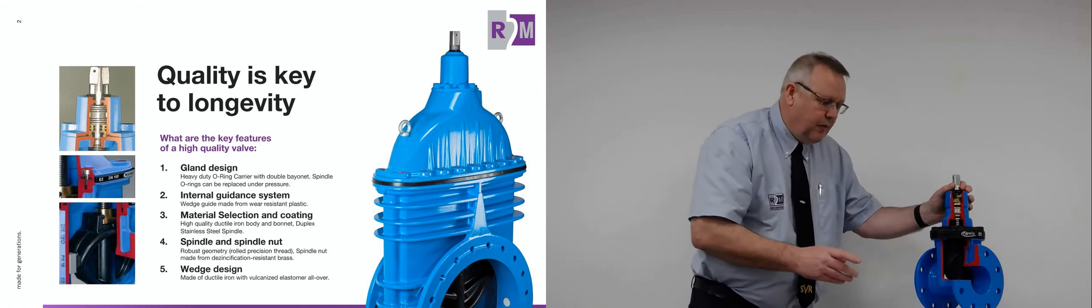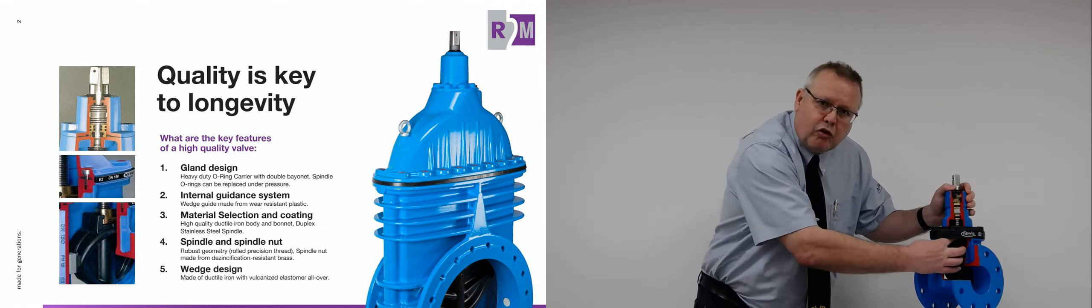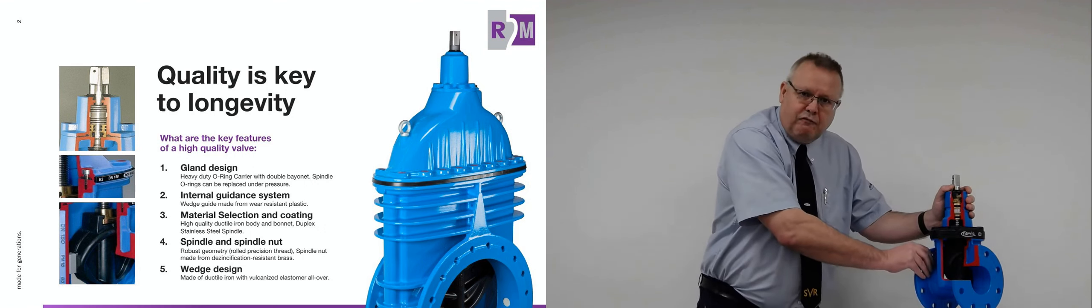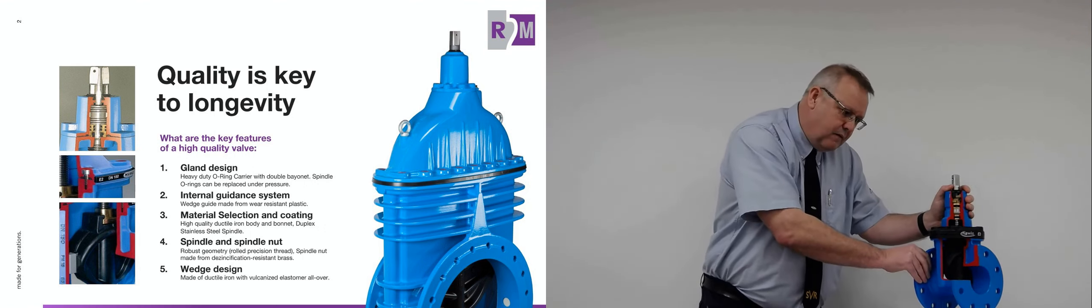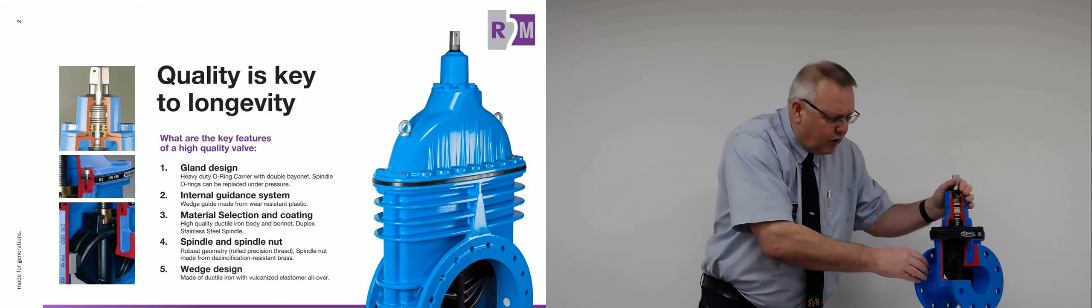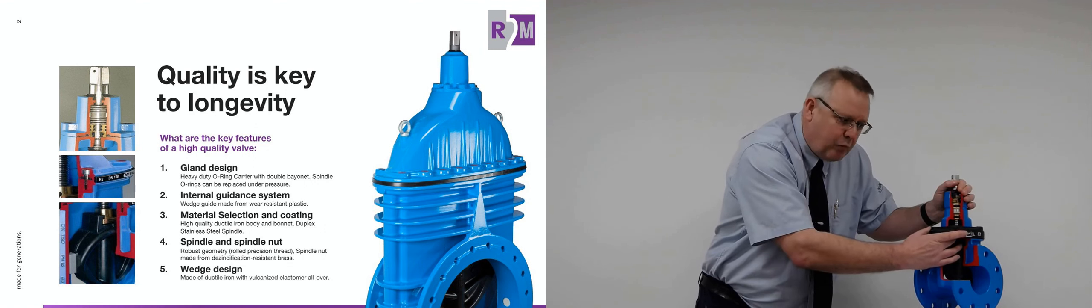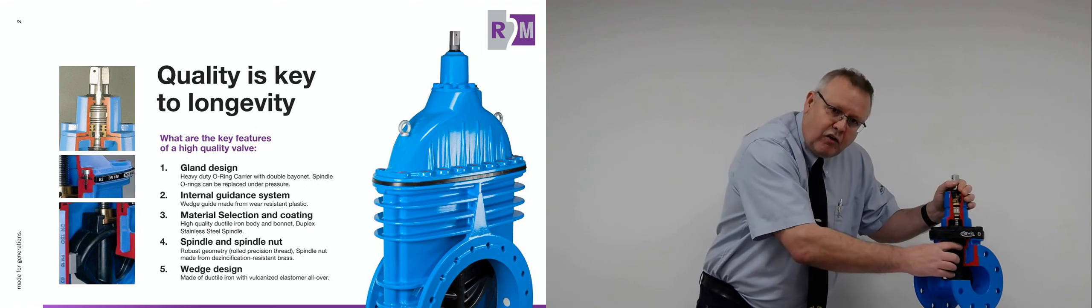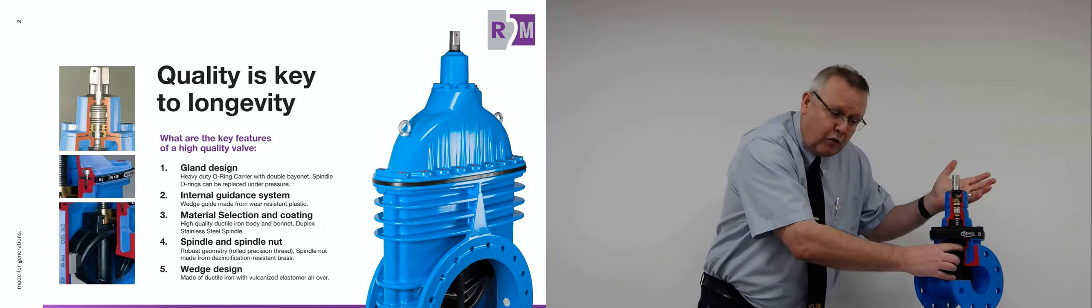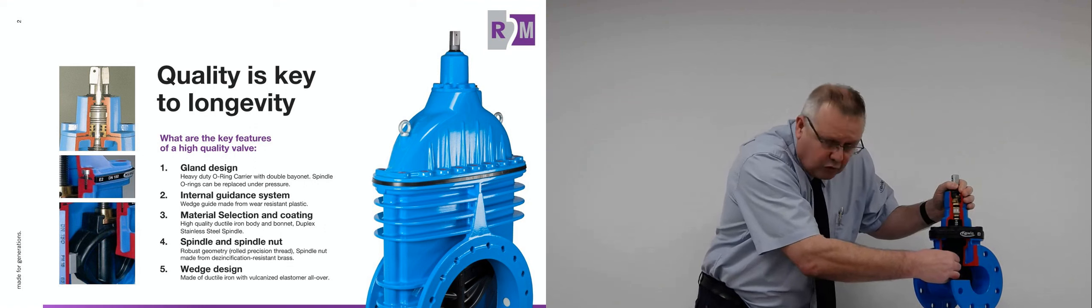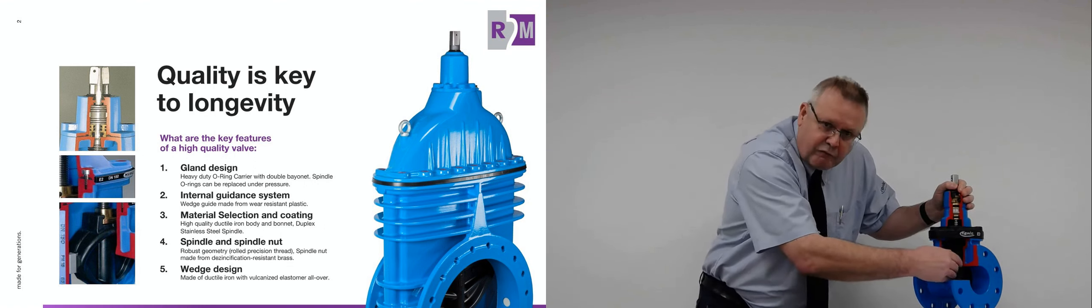The material selection and coating, we've got a spindle that's made from a duplex stainless steel. We've got a body that's a very high quality ductile iron. The spindle on the spindle nut, again it's a really robust geometry, we've got a roll thread on the spindle. The brass nut itself will stop zincification because the alloy is so good. And we've also got the wedge design, which is a ductile iron body with a fully vulcanized coating.